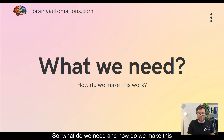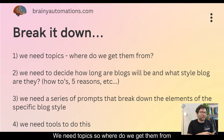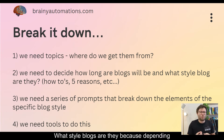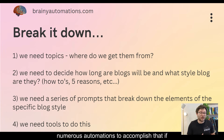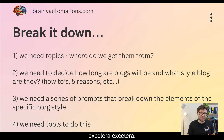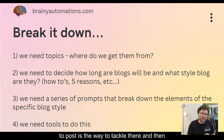So what do we need and how do we make this work? The first step is breaking things down. First, we need topics — where do we get them from? Then we need to decide how long our blogs will be, like word count, and what style blogs are they? Because depending on the style blog you want, it might actually require you to set up numerous automations. The format of a 'how to' style blog versus 'top five reasons' is different, so it's unlikely you can do that all in one automation.